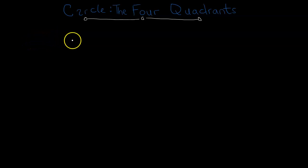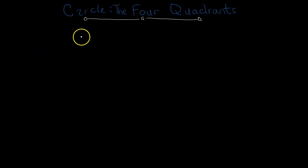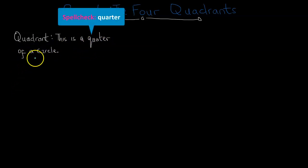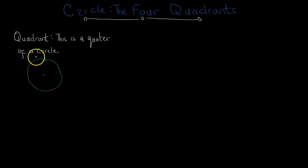Hello everyone. In this video we are going to be considering the four quadrants. This is a continuation of the series of problems we worked on on circles and trigonometry — to see one of them, just click on the link at the top right-hand corner of your screen. A quadrant is a quarter of a circle, and we know a circle to be the locus of points that is equidistant from a fixed point. We have an infinite number of points on the boundary, and this point here is the center of the circle.